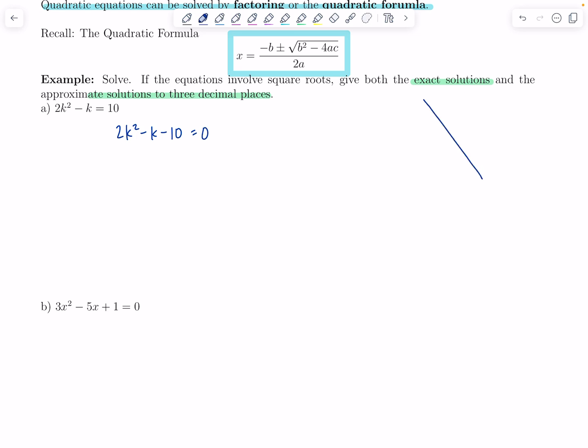Then now you're going to try to factor. Can you think of two numbers that multiply to 2 times negative 10? That's negative 20. That add up to negative 1. Good. It's negative 5 and 4. So then you can split that middle term and write it as 2k squared minus 5k plus 4k minus 10 is 0.